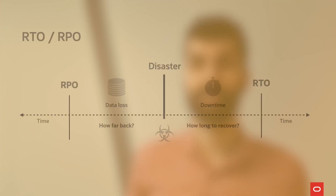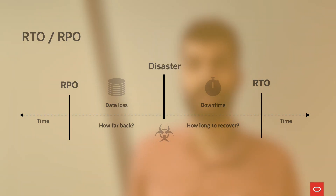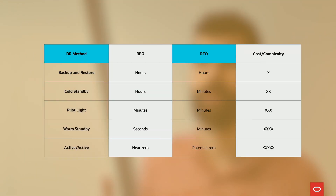Recovery point objective refers to the maximum data your company can tolerate losing. As an example, a blog that you are posting once a week can tolerate more than a bank that is having thousands of transactions per hour. The recovery time objective is the maximum length of time it should take to restore your normal operations. The DR solution you choose depends on many possible requirements including availability, RTO, RPO, and data durability.